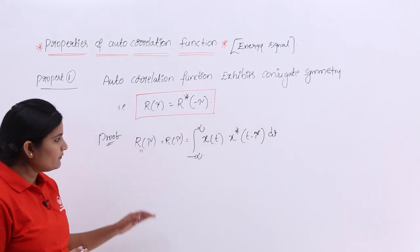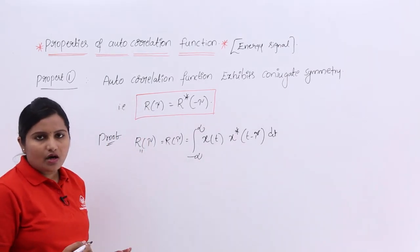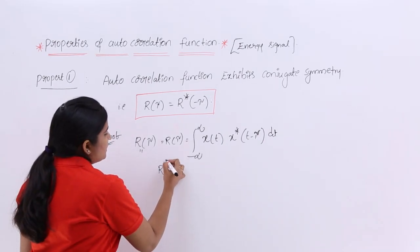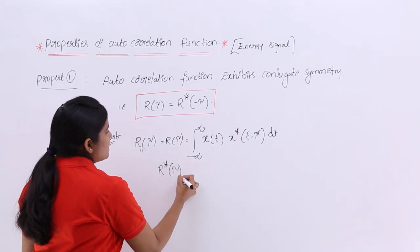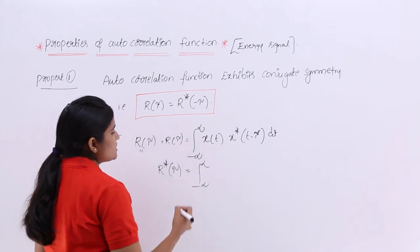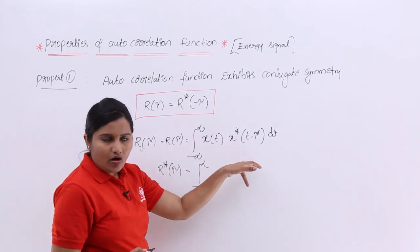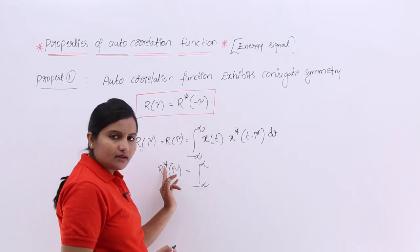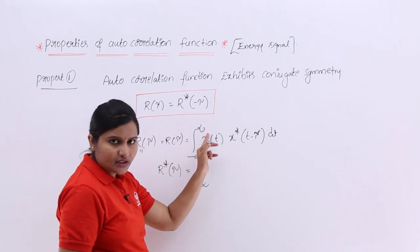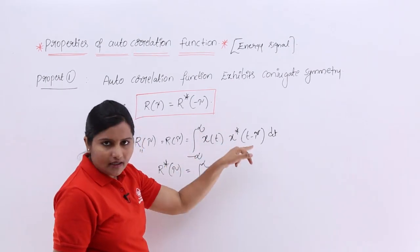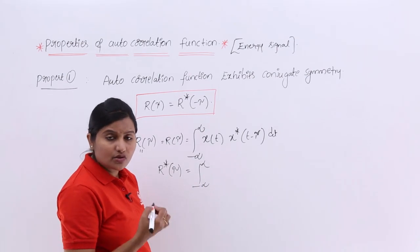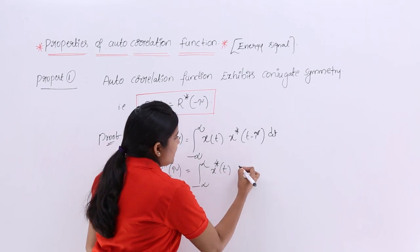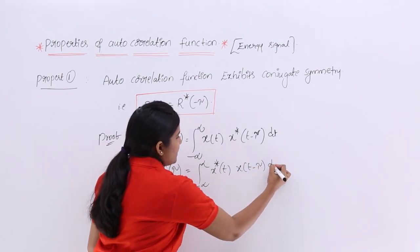Now I want to consider r*(τ). If we apply complex conjugate to this expression, where there is no complex conjugate it will appear, and where there already is a complex conjugate it will cancel. So r*(τ) is equivalent to the integral of x*(t) · x(t − τ) dt.